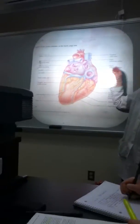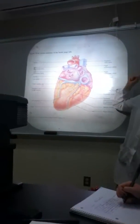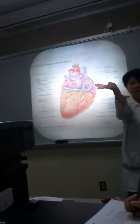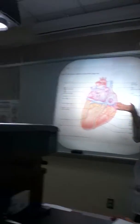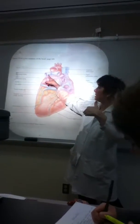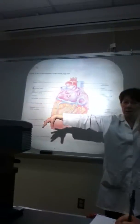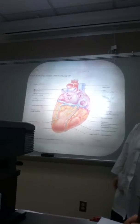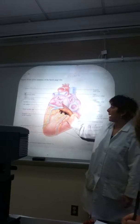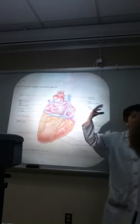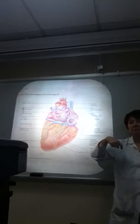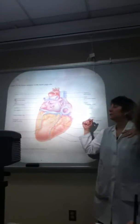Superficially, you see the pulmonary trunk, which then branches into the right and left pulmonary arteries on the posterior. Pulmonary arteries going to the lungs. And these are the pulmonary veins coming back, bringing oxygenated blood to the heart.